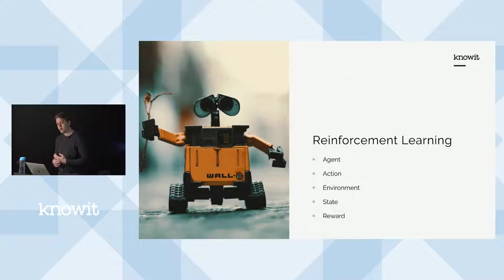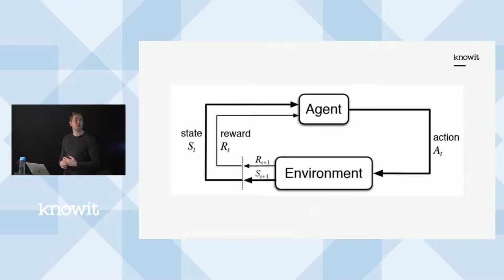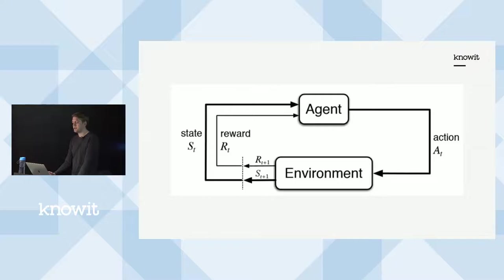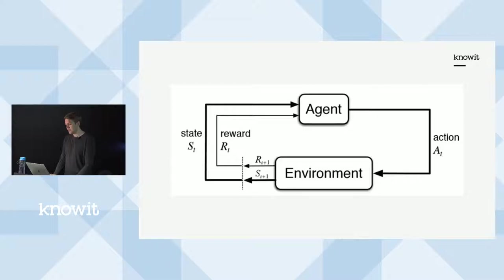The reward is a feedback by which we measure the success or failure of an agent's actions. For instance, in a video game, when Mario touches a coin, he gets some points. Here's how reinforcement learning works on the most basic level: we have a state and a reward as input to the agent, the agent performs an action in the environment, the environment returns the next state and the reward for that action, and it continues in a loop until it stops.